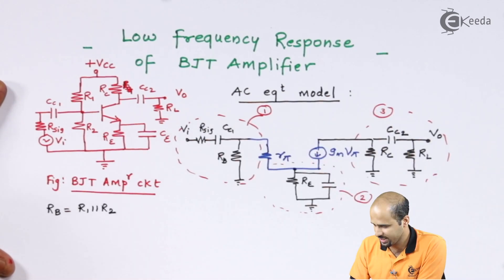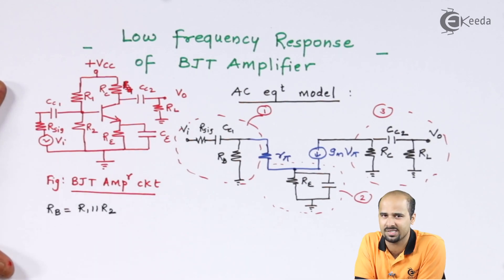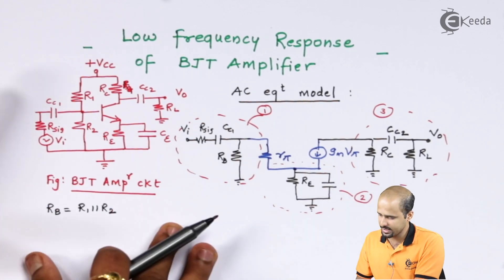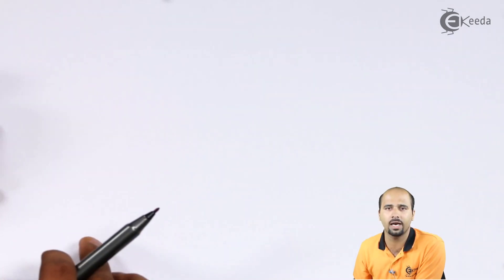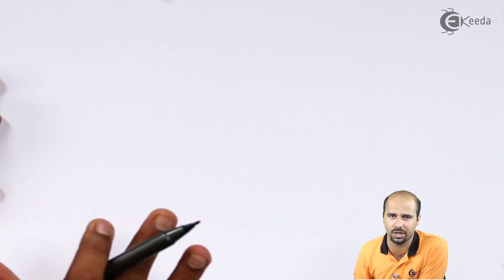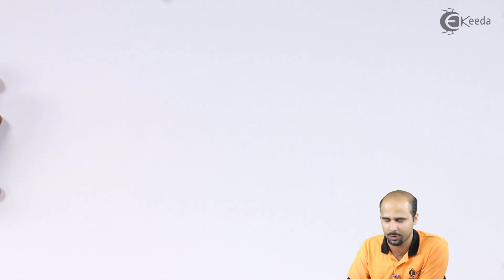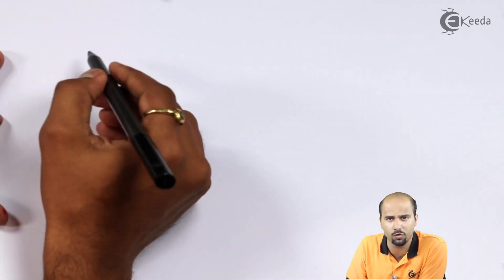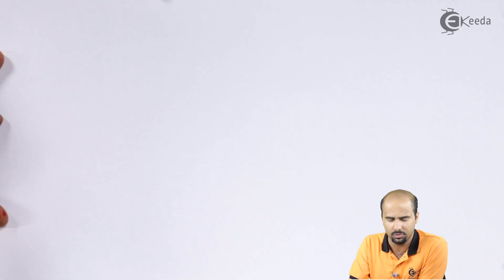We will concentrate on each of the three parts: the first part, the second part, and the third part. Each and every RC circuit is associated with a lower cutoff frequency, and each lower cutoff frequency will have a different value from the others. So we have to calculate the value of the lower cutoff frequency for each and every RC circuit in this single stage BJT amplifier. Let us move towards the calculation of the lower cutoff frequency at the input side.